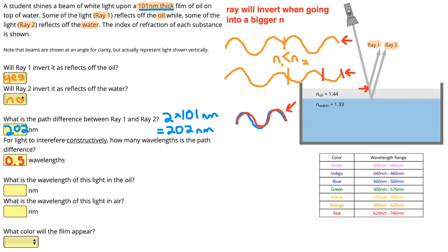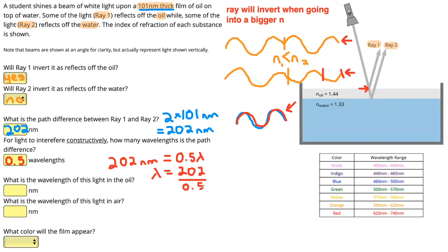We know the path difference must be 0.5 wavelengths, and we also know the path difference is 202 nanometers. Setting these equal: 202 nanometers = 0.5 wavelengths. To get the wavelength on its own, we divide both sides by 0.5 — equivalently, multiply by 2. The wavelength is 202 ÷ 0.5 = 404 nanometers.